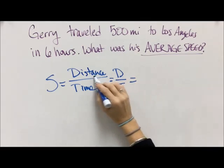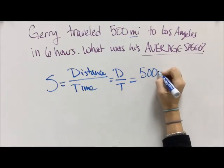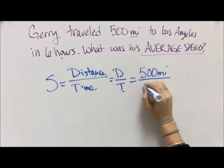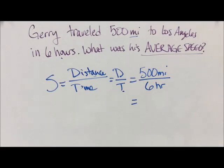So distance divided by time. Our distance here is 500 miles because miles is a unit for distance. This is where those units are so important. And time is six hours, so that's going to go on the bottom. So now 500 divided by six, and of course I picked things that I couldn't do easily in my head. Hashtag long division.